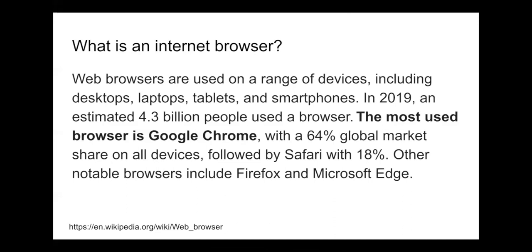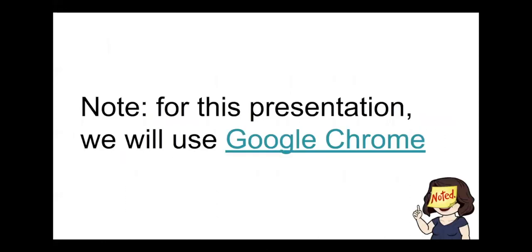This might be in large part because Chromebooks exclusively use Google Chrome, and a lot of students use Chromebooks right now especially with distance learning. The second most popular browser is Safari at 18%, which is mostly found on Apple devices like iMacs or iPhones. After that, popular browsers include Firefox and Microsoft Edge. If you have a Microsoft device it probably came with Edge. Firefox is the browser I use most often personally. It runs essentially the same as Google Chrome but has additional privacy and usability features. Today we'll be using Google Chrome because it's the most commonly used browser.